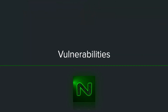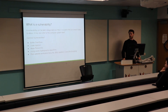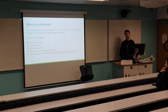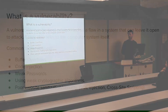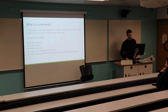A vulnerability is best categorized as a flaw in a system that can leave it open to attack. Some common vulnerabilities include buffer overflows, code injection, weak passwords, weak cryptographic algorithms, poor use of hashing algorithms, and website sanitization issues such as SQL injection and cross-site scripting — which are more on the web app side of things but still absolutely relevant.